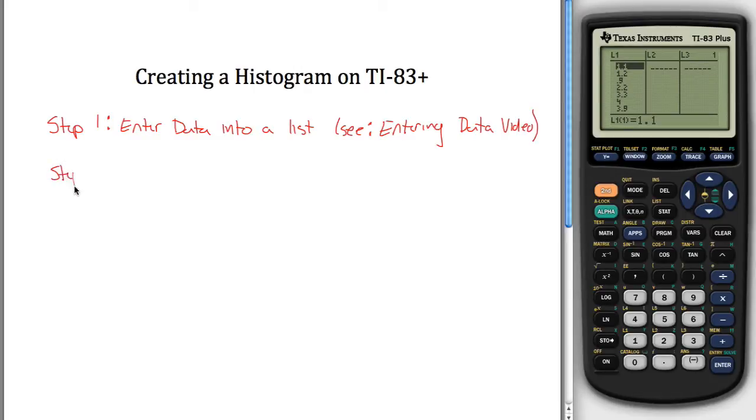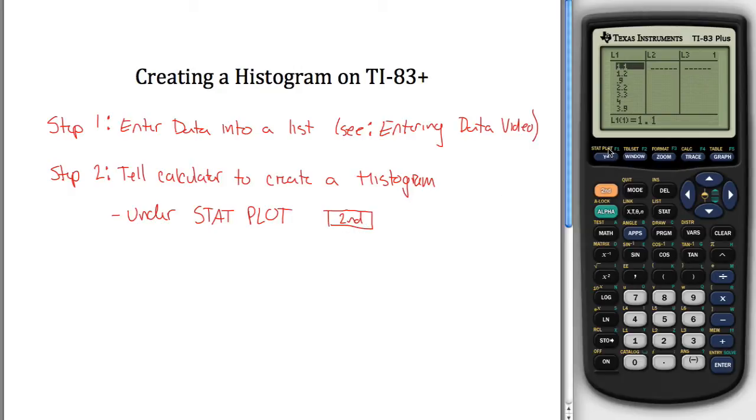Step two is you need to tell your calculator to create a histogram. You can do this from any screen on your calculator by going under stat plot. The way you get to stat plots is you hit second and then y equals, because above this y equals key it says stat plot.